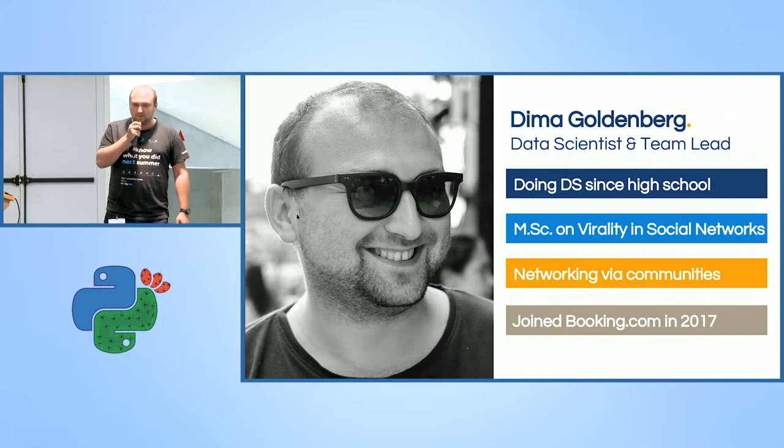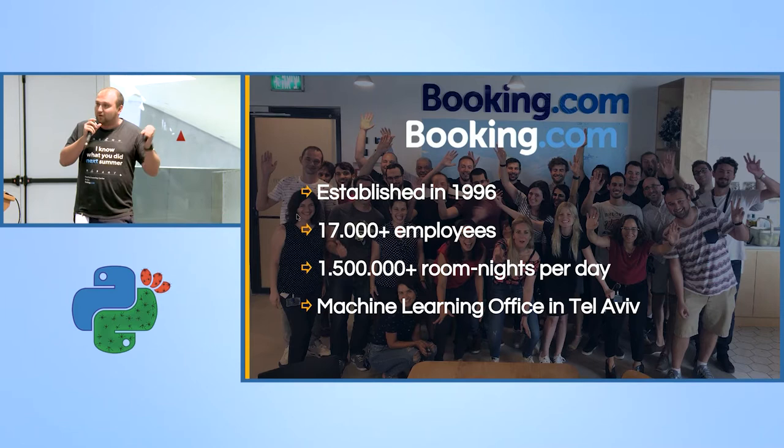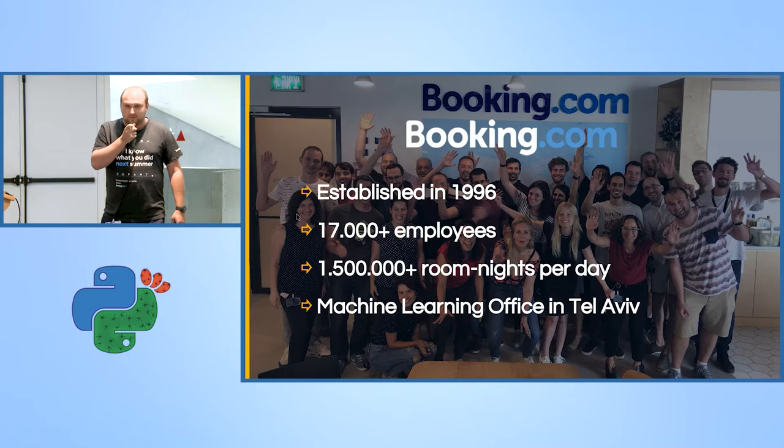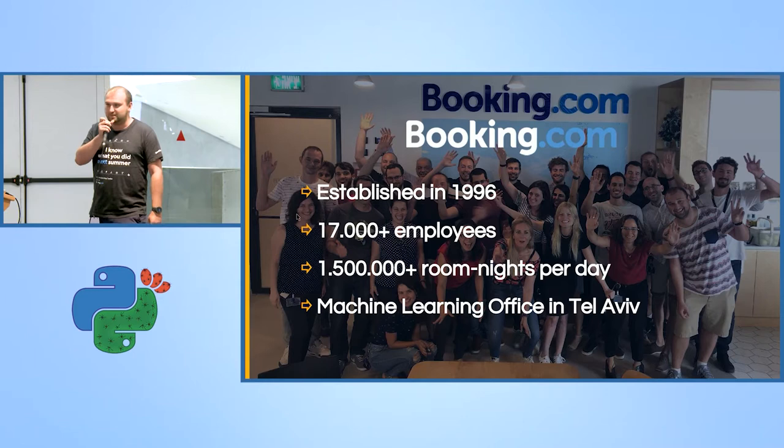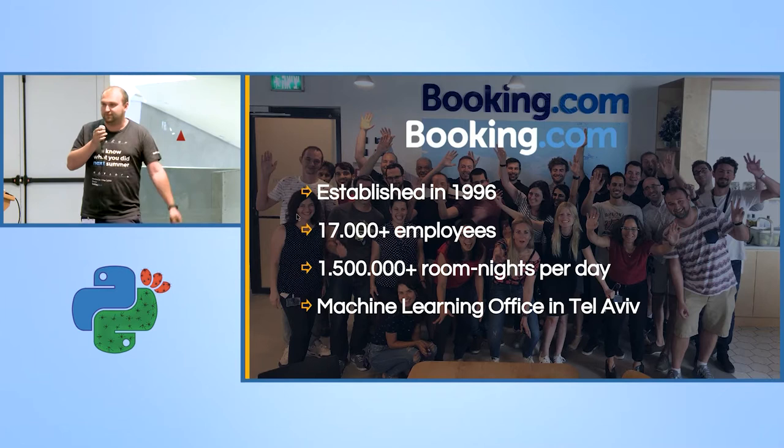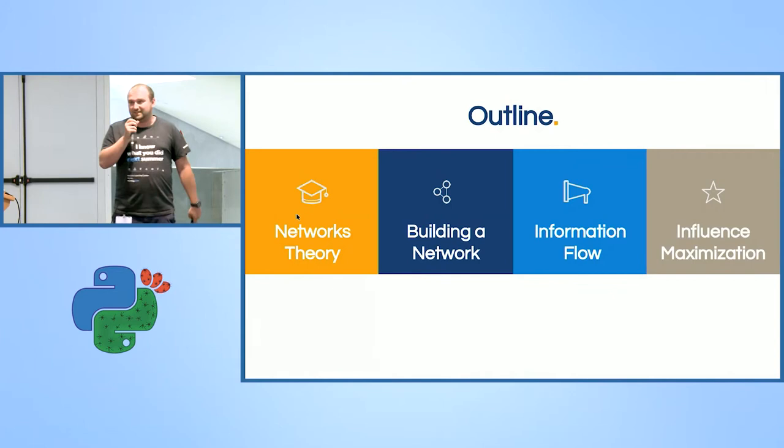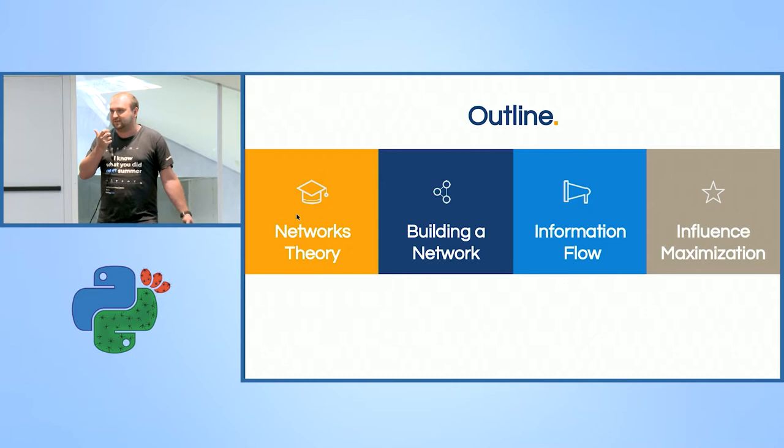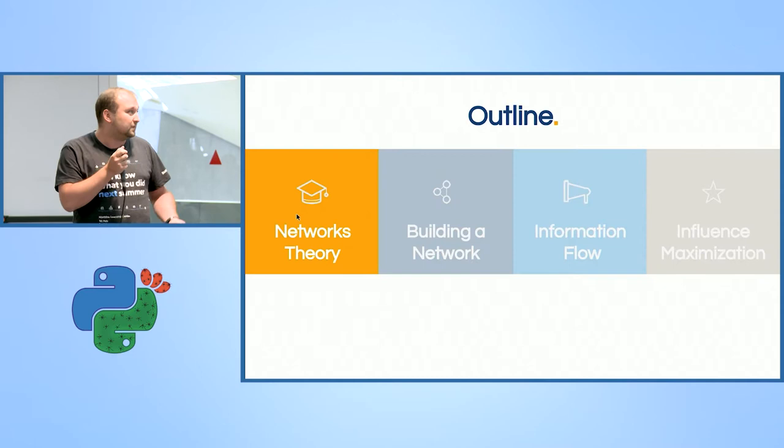Booking.com is quite an old company in terms of internet because it's established in 96, and it has around 17,000 employees. But here in Tel Aviv we are for the last year and a half, so we have about 40 people here, and we focus mostly on machine learning and different problems of recommender systems, fraud, and anything else. What I'm going to talk with you now is trying to cover this path of discovering network analysis. So let's start with networks theory.